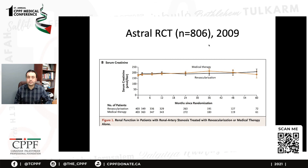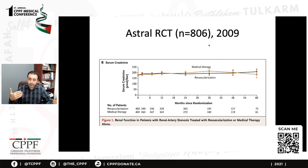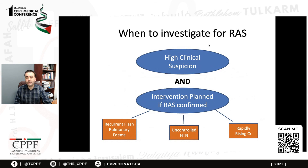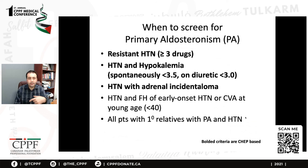For renal artery stenosis, endovascular angioplasty can open up the lesion blocking the renal artery. However, the ASTRAL RCT and other RCTs have shown that medical therapy is just as good as revascularization for long-term kidney health. We only pursue endovascular procedures if you have recurrent flash pulmonary edema, uncontrolled hypertension, or a rapidly rising creatinine. Outside of those situations, even if you diagnose renal artery stenosis, it can be treated with medical therapy alone. I don't necessarily investigate for renal artery stenosis unless I have one of those indications.